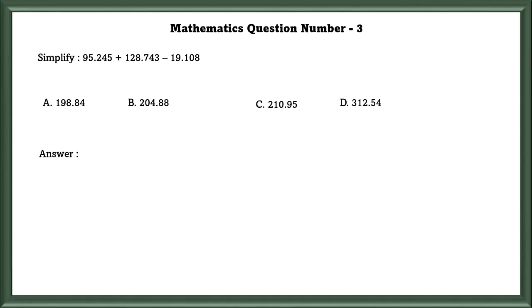Mathematics Question No. 3: Simplify this equation. We have to add the first two numbers and subtract the third number. Then we will get 204.880.